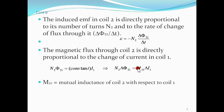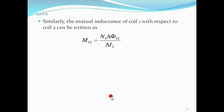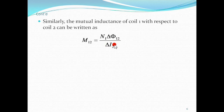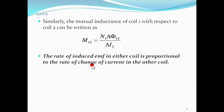Rearranging this expression, M21 can be solved as N2 times change of flux divided by delta I1. If you switch the primary and secondary coils, the mutual inductance of coil one with respect to coil two equals the number of turns of the first coil times change of flux of the first coil due to current in the second, divided by change of current in the second. In all cases, the rate of induced EMF in either coil is proportional to the rate of change of current in the other coil.